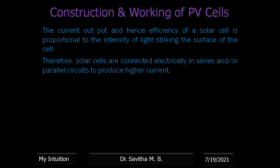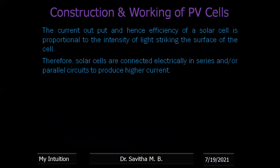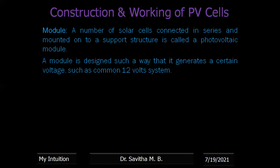The efficiency of the solar cell is proportional to the intensity of light striking the surface of the cell. Therefore, solar cells are connected electrically in series or in parallel to produce higher current and generate more electricity. A number of solar cells connected in series and mounted on a support structure is called a module.